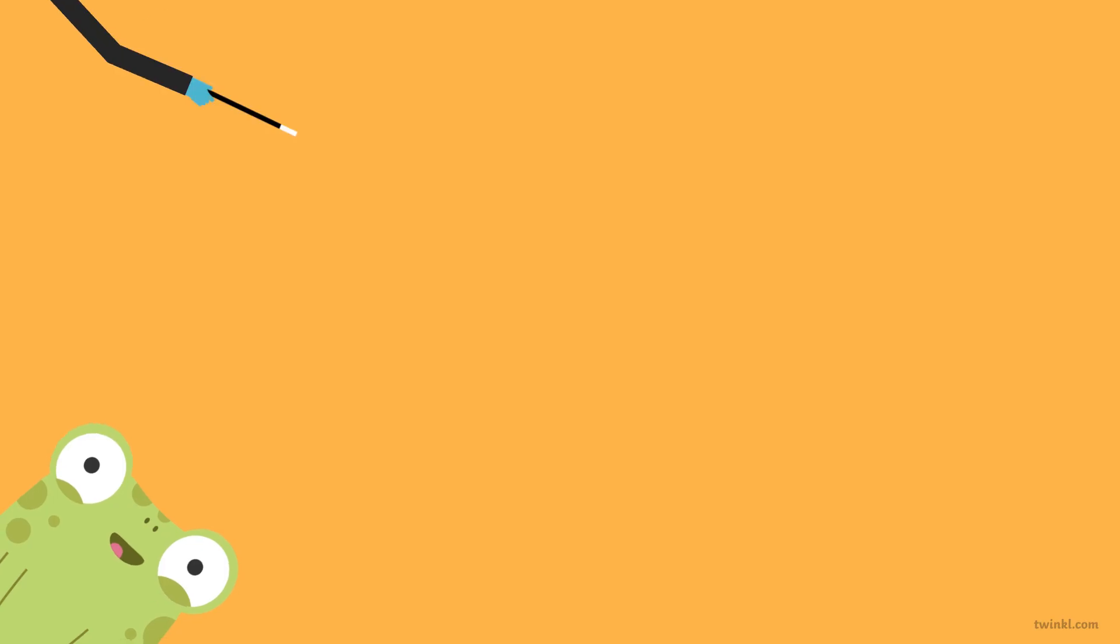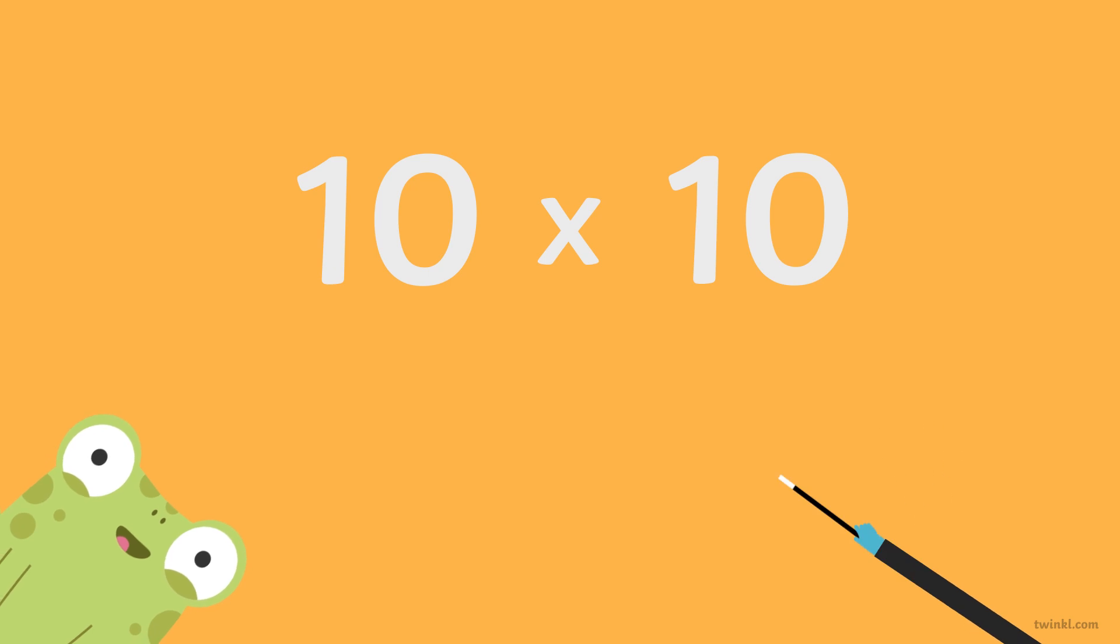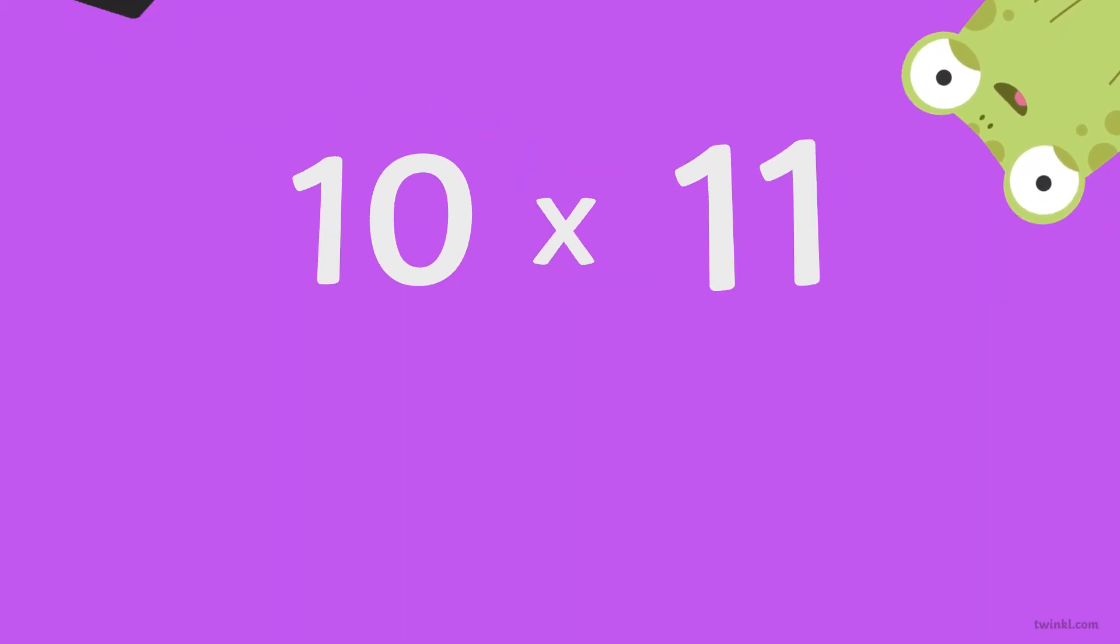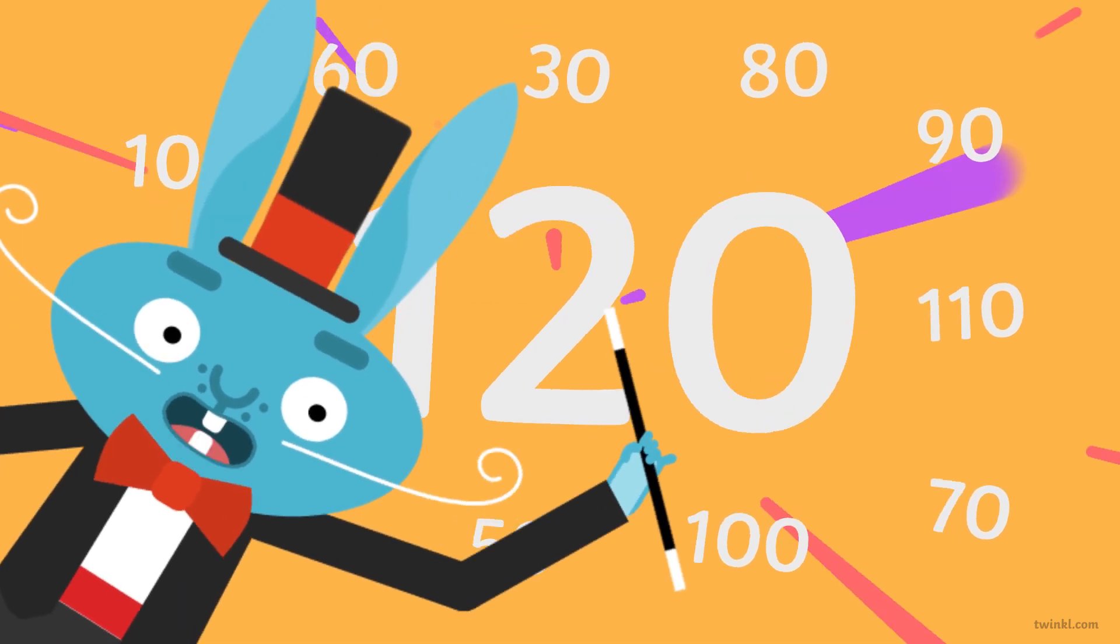Ten times ten is one hundred. Ten times eleven is a hundred and ten. Ten times twelve is a hundred and twenty.